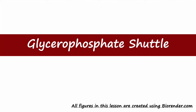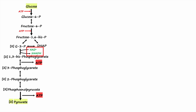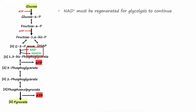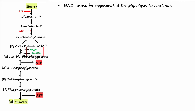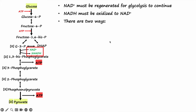In this video we are going to learn about the glycerophosphate shuttle. As mentioned in a previous video, NADH is also generated in the cytosol through the glycolysis pathway. If this NADH is not oxidized to regenerate NAD+, the glycolytic pathway could cease to function. Therefore, it is important that NAD+ must be regenerated for glycolysis to continue, and to regenerate NAD+, NADH must be oxidized.